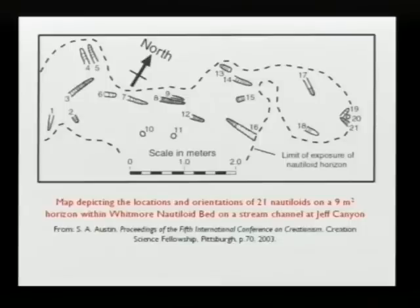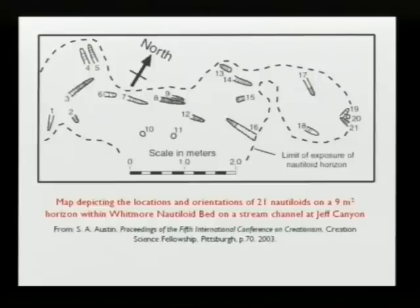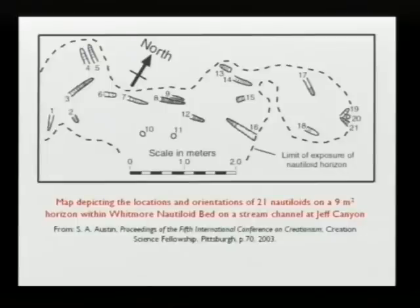It soon became apparent that the nautiloid-bearing layer ran the entire length of Grand Canyon — the whole 277 miles — packed full of nautiloid fossils. Austin has since done a great deal of work to document his findings. A published map depicts the locations and orientations of 21 nautiloids in a 9-square-metre horizon at Jeff Canyon. He says the abundance is pretty typical — on average about one nautiloid per square metre — and estimates that in the layer as a whole there are easily one billion fossil nautiloids, possibly up to ten billion.